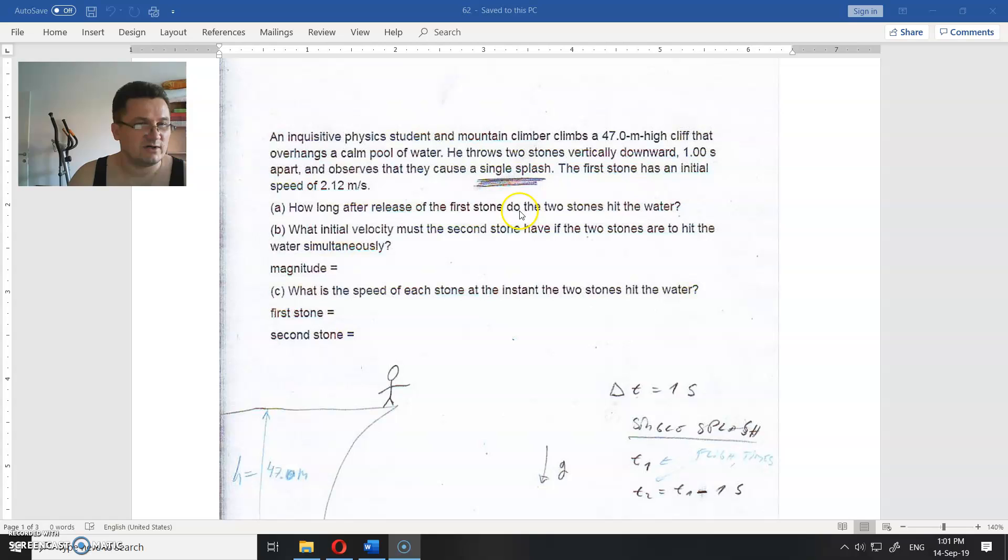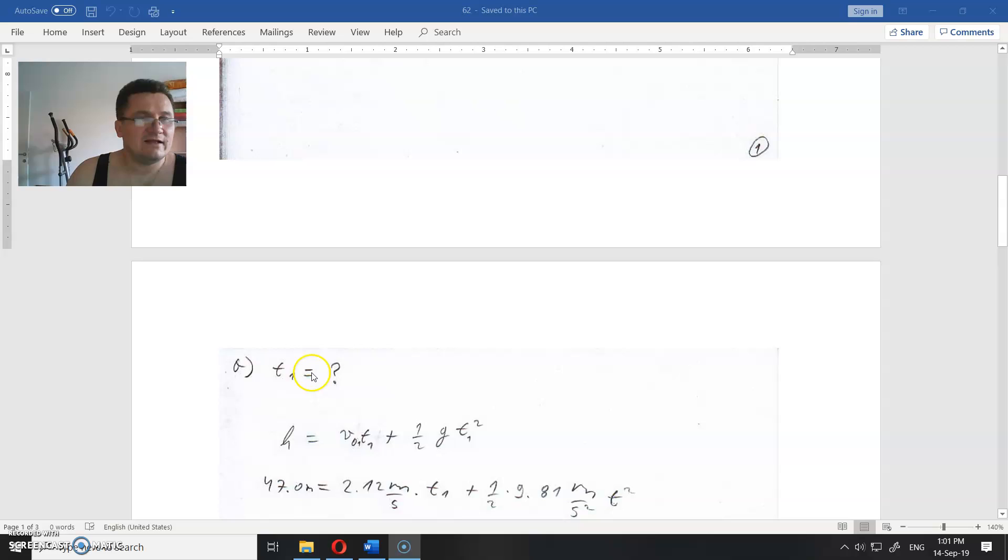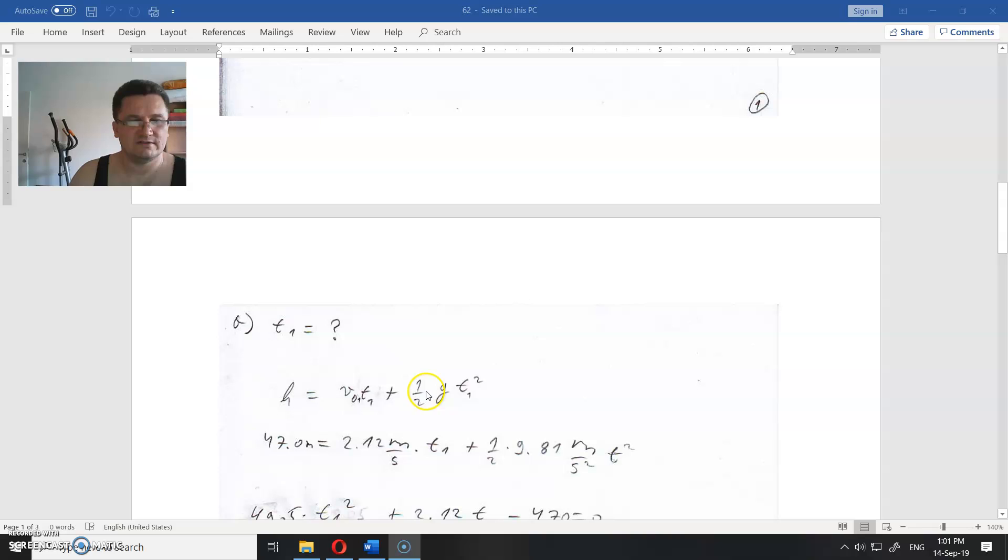So let's see how we can calculate that. We need the time. That is the height, this is the initial velocity, this is the time that we don't know. This is H = v₀t + ½gt². This is the equation for accelerated motion with initial speed.